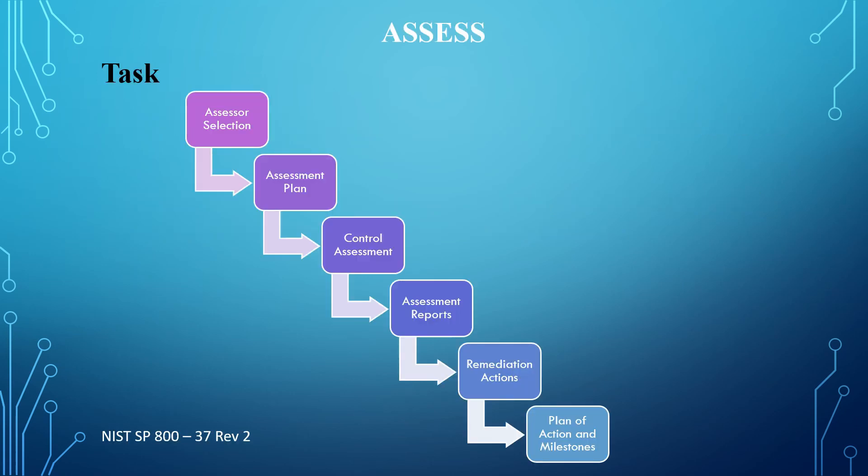These are the tasks that fall under the Assess step of the NIST Risk Management Framework. The first task is assessor selection — you select the appropriate assessor or assessment team for the type of control assessment to be conducted. The next task is the assessment plan.